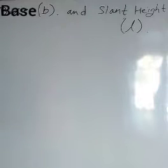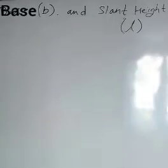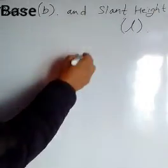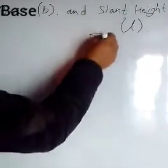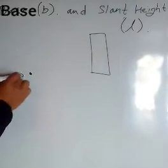This is an example for the relation between base and slant height of a triangle. Suppose this is a building here and you are standing somewhere here at point P.